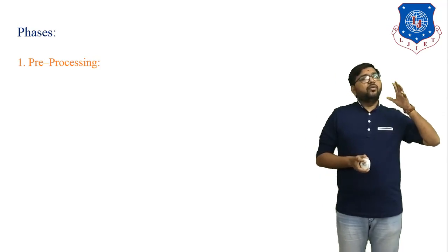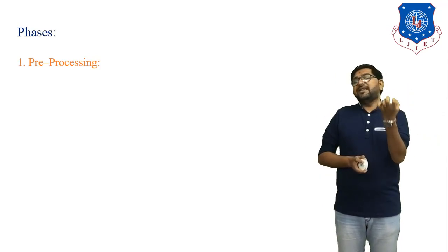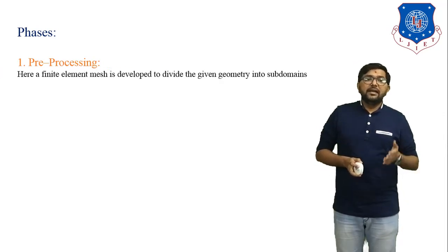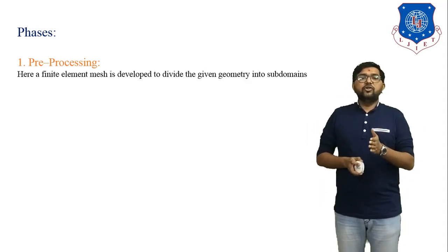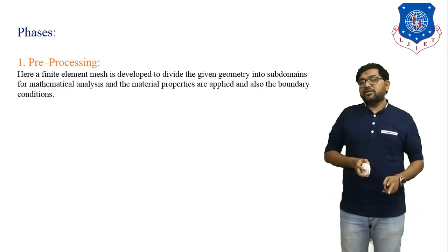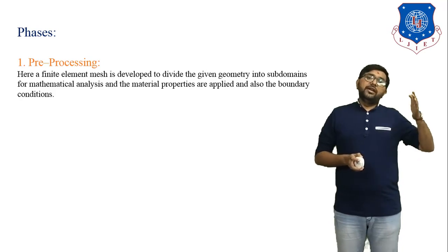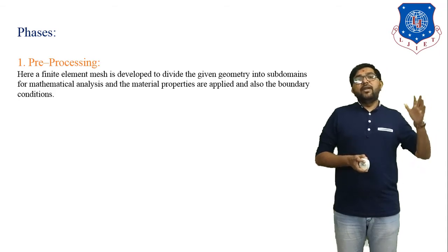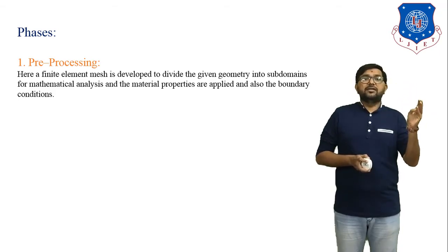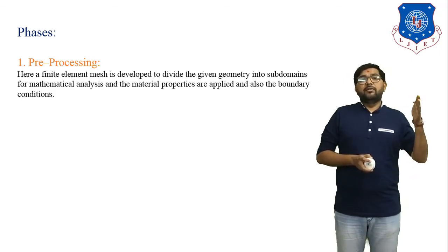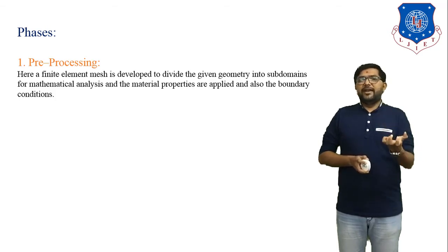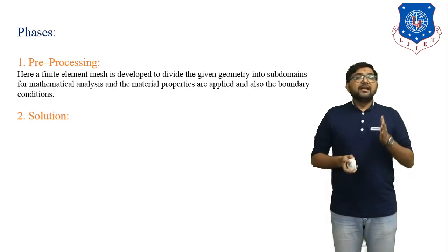When solving any problem using FEA, it is divided into 3 phases. The first phase is preprocessing. In preprocessing, a finite element mesh is developed to divide the given geometry into subdomains for mathematical analysis, material properties are applied, and boundary conditions are defined. We divide the object into parts, define boundary conditions, and enter material properties such as elasticity, plasticity, pressure, volume, and temperature. In preprocessing we collect all basic data of the object and apply it in the software.